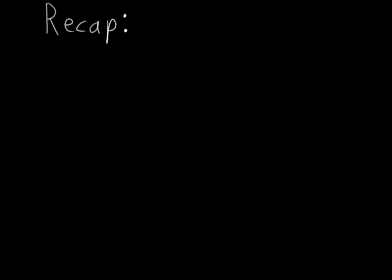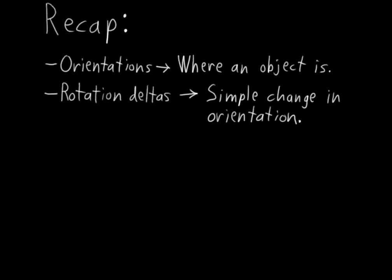So to recap, orientations are where an object is, rotation deltas are a simple difference or change in orientation, and rotation paths are a full recorded path of how an object rotated to where it is.